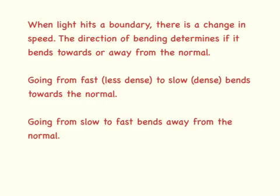In summary, you need to know that when light hits a boundary, there's a change in the speed. The direction of bending determines if it bends towards or away from the normal. Going from something that's fast, a less dense medium, to a slow, dense medium bends towards the normal. Going from a slow to fast bends away from the normal.